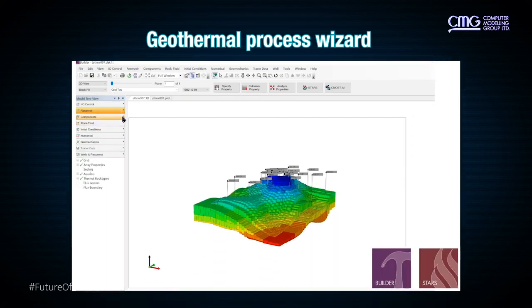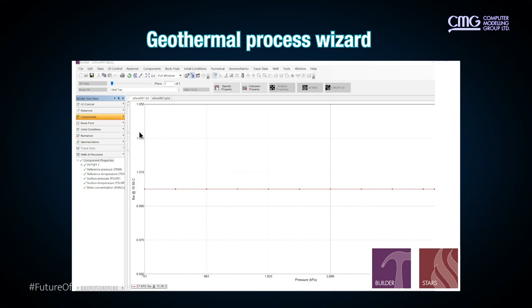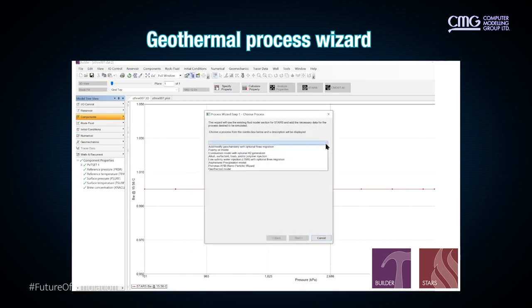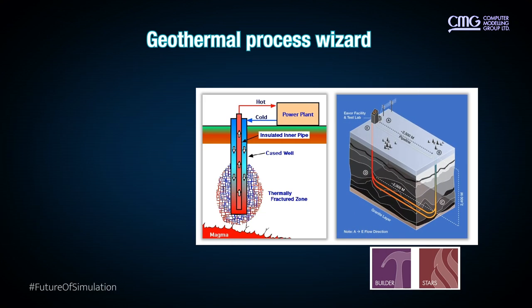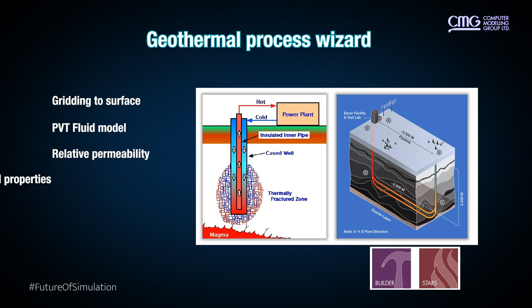Continuing on with the thermal world, we have automated the geothermal workflow in a process wizard. Process wizards are guided tasks that help simplify the steps of building complex simulation models. As you can see here, we have guided tasks for anything from ASP to foam injection to asphaltene — and we now have geothermal in this list. For geothermal, we have various options to choose from, and the process walks you through the geothermal workflow including gridding to surface, PVT fluid, relative permeability, thermal properties of both the reservoir and the well, and well configurations — whether open, closed, closed with a single U-shape, closed with the annulus in the casing, or one well injecting into another.